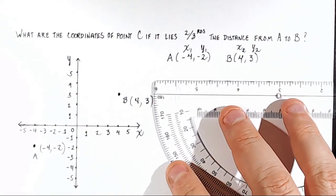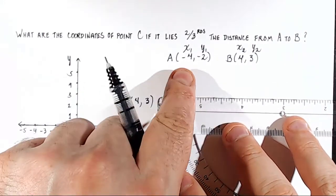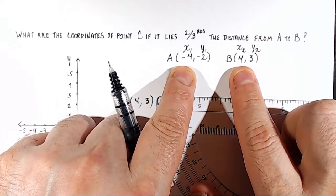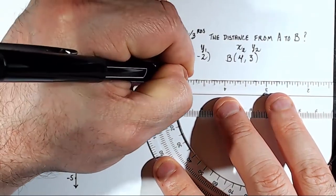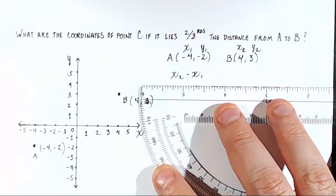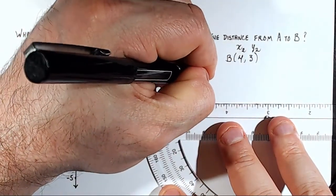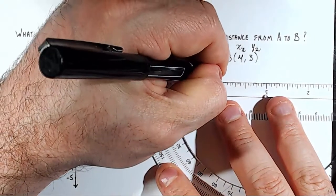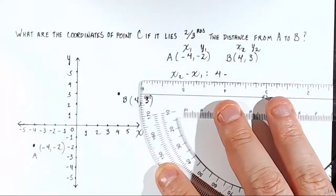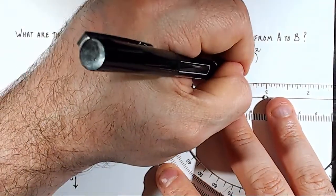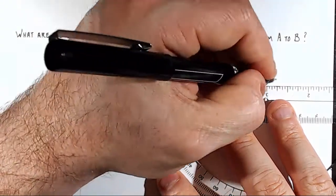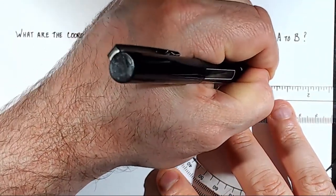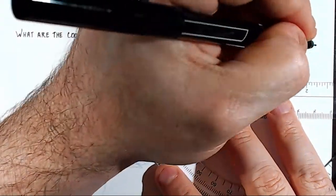First, we need to find out what the absolute difference is between the two x values, right? How would we find that? We would take x2 minus x1. So what does that look like? x2 minus x1 looks like 4 minus negative 4. So it's 4 minus negative 4. 4 minus minus becomes 4 plus. So 4 minus negative 4 is really 4 plus 4 is 8.